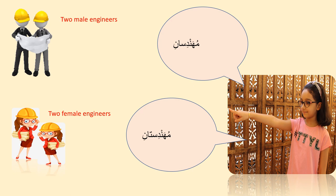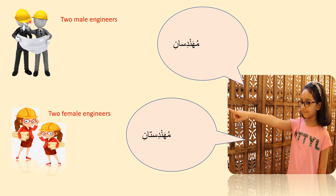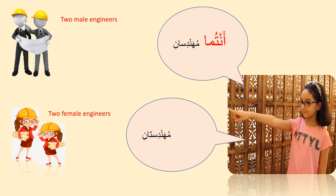Here, two male engineers are standing in front of me. I want to say 'you both are engineers.' Arabic has a dual form used to refer to exactly two people. The dual second person pronoun is Antuma. 'Antuma Mohandisani.' In the next example, two female engineers are addressed — since Antuma is used for both male and female dual, we also say 'Antuma Mohandisatani.'